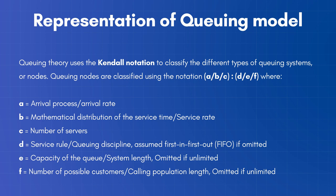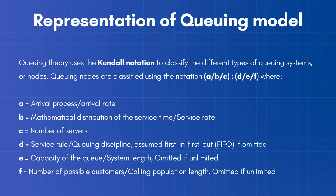The service rule is assumed first in and first out if it is omitted. The capacity of the queue or system length is omitted if it is unlimited, and the number of possible customers or calling population length is omitted if unlimited.